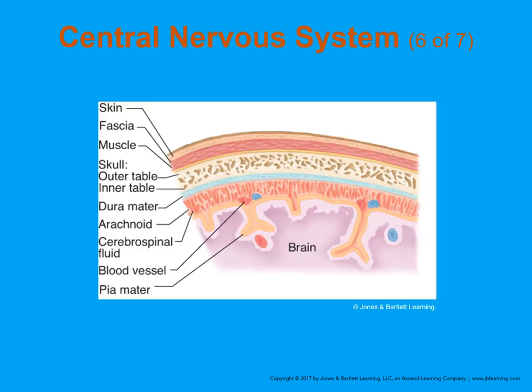The inner two layers are called the arachnoid mater and the pia mater. The outer layer is the dura mater, then the arachnoid space — named because a doctor who discovered it thought it looked like spider webs. Below that we have cerebral spinal fluid, blood vessels, and then the pia mater, which goes around each part of the brain.